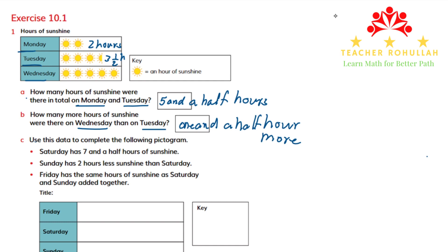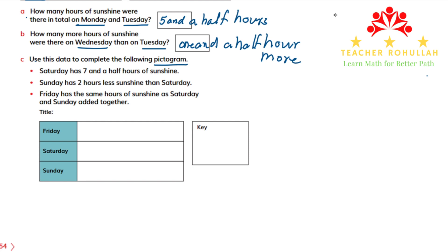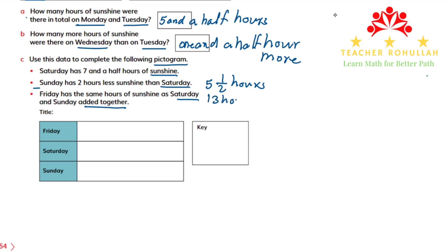In part C of this question, it says: use the data to complete the following pictogram. The data shows that Saturday has seven and a half hours of sunshine, and Sunday has two hours less than Saturday. Friday has the same hours of sunshine as Saturday and Sunday added together. So Saturday is seven and a half hours. Sunday will be two hours less, which is five and a half hours. And Friday has five and a half plus seven and a half. Five and a half plus half is six, and six plus seven is 13, so there are 13 hours of sunshine on Friday.